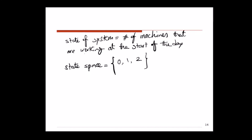Now I want to put together the transition probability matrix P. What is the size of this matrix? We have three states — zero, one, two — so it's a three by three matrix. The values we put in this transition probability matrix show the probability of going from state I to state J.